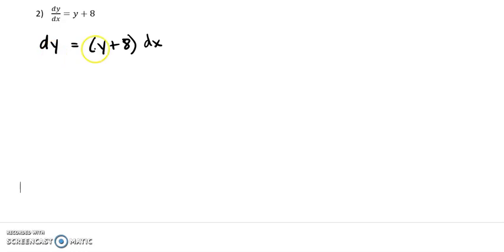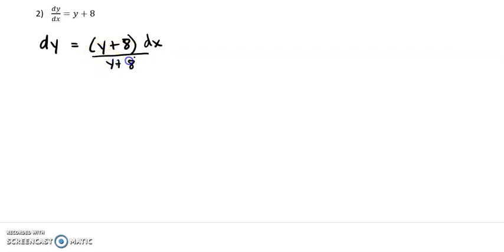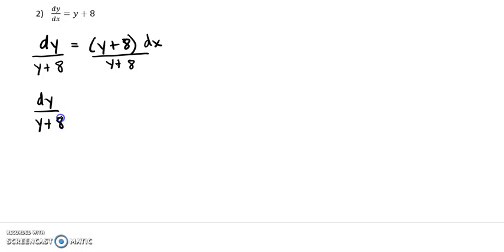We need dy's and y's on one side and dx's and x's on the other side. It looks like y plus 8 — y is not on the same side. So I'm going to divide both sides by y plus 8 to get it to the other side. So we have dy over y plus 8 equals dx.